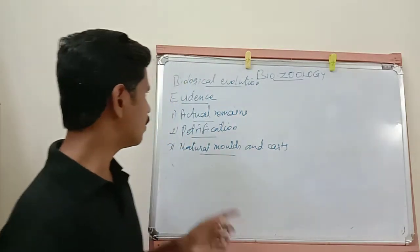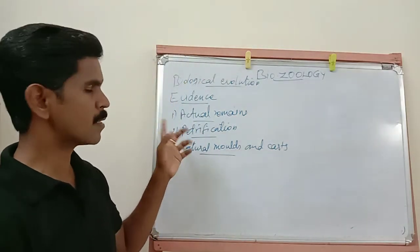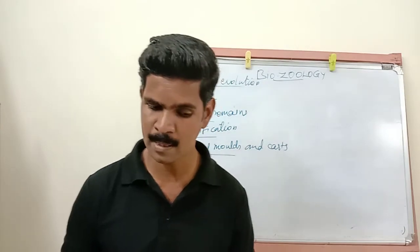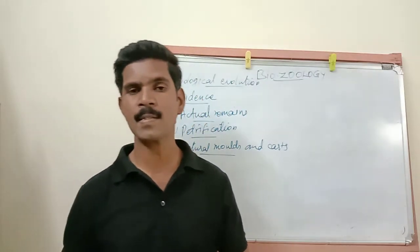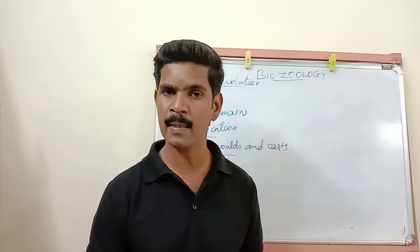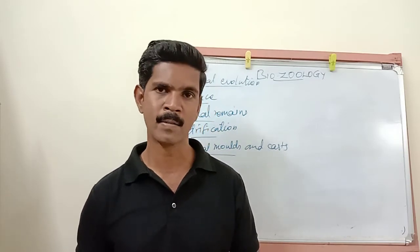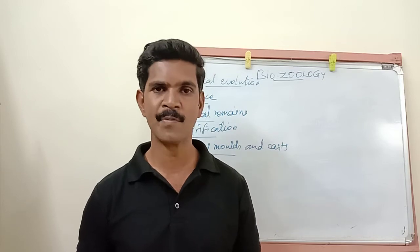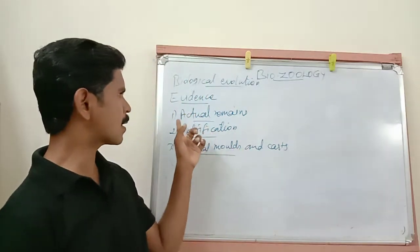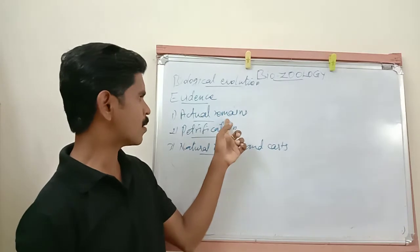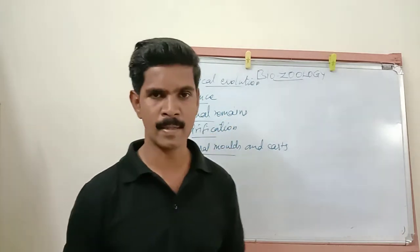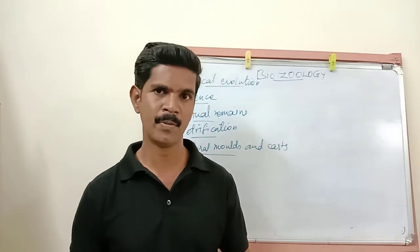Now we have completed the three important categories of fossilization. Fossilization means the process by which animals' and plants' parts are preserved in the sedimentary rock. This comes under three categories: the first is actual remains, the second is petrification, and the third is natural mold and cast.